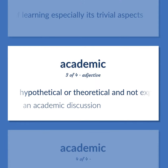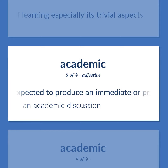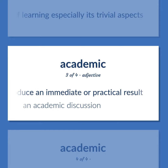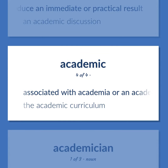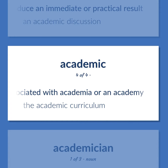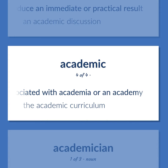Academic: hypothetical or theoretical and not expected to produce an immediate or practical result. For example: an academic discussion. Also: associated with academia or an academy — for example, the academic curriculum.